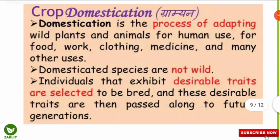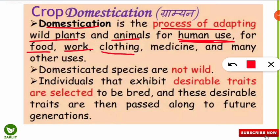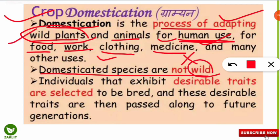Now we will know about crop domestication, which is also called gramination. We all know what domestic animals are — animals we keep in our homes or farms for human use. Similarly, domestication of crops is the process of adapting wild plants and animals for human use — for food, work, clothing, medicine, and many other uses. When we use wild varieties of plants for human usage by altering their genes and adapting them to our environment, it is called crop domestication. Domesticated species are not wild, as their genes have been altered for human use.